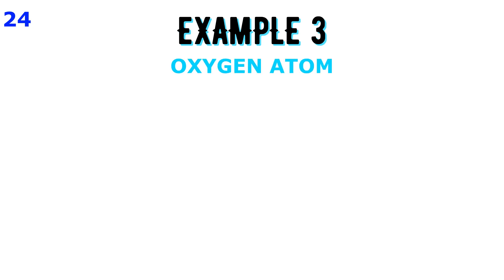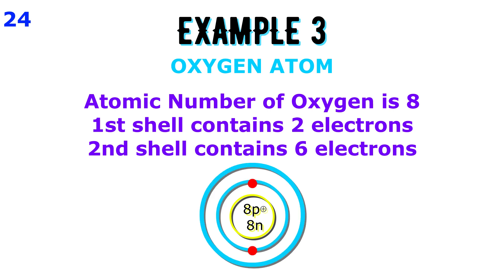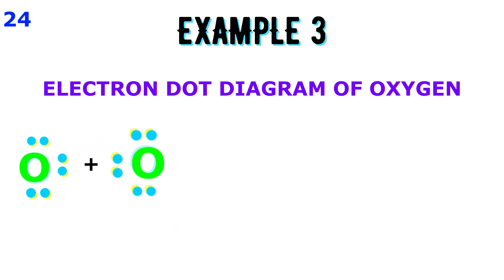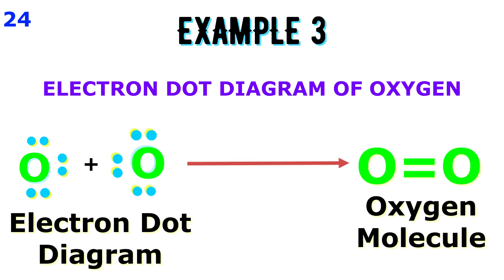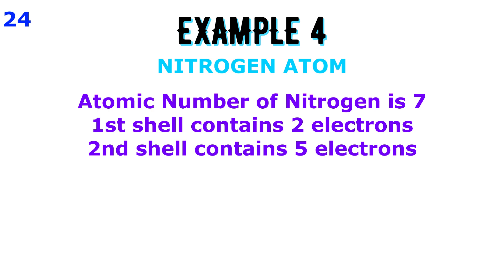Oxygen: An oxygen atom has six electrons in its outermost shell. It needs two electrons to complete its octet and attain the configuration of neon. Hence, two oxygen atoms combine by sharing two pairs of electrons between them and form a covalent molecule. Two pairs of shared electrons are shown by a double line and form a double covalent bond.